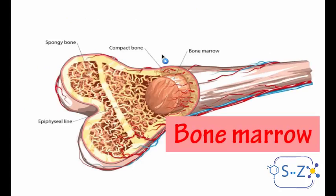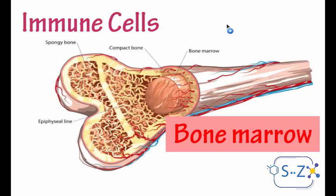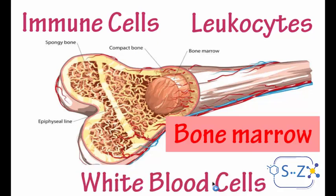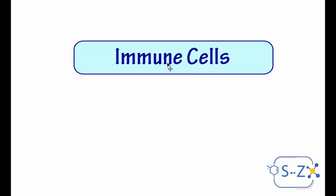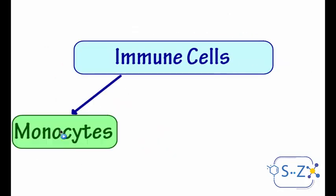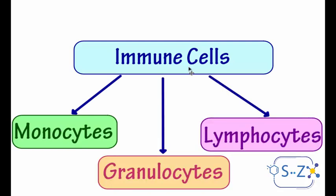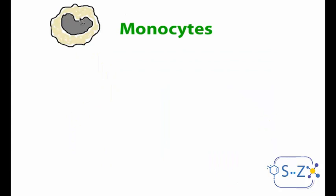The immune cells — also called leukocytes or white blood cells — are all produced and born in the bone marrow. Inside the bone marrow there are mother cells, called stem cells, that produce these immune cells. The immune cells can be classified into three main types: monocytes, granulocytes, and lymphocytes.